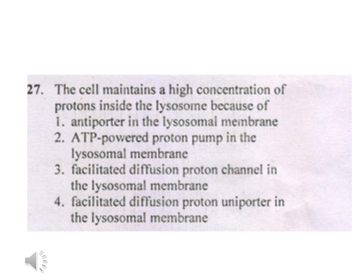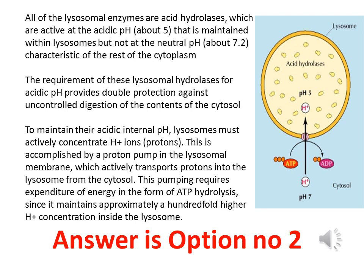Let's see more about the lysosomal membrane and lysosome. All of the lysosome enzymes are acid hydrolases, which are active at acidic pH around five. So the lysosome needs to be maintained in an acidic condition for the enzymes to work. This requirement of lysosomal hydrolases for acidic pH provides double protection against uncontrolled digestion of the contents of the cytoplasm.